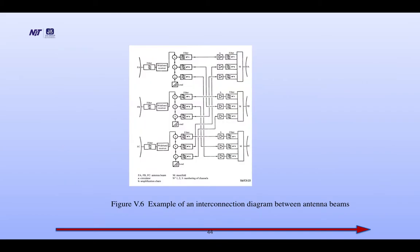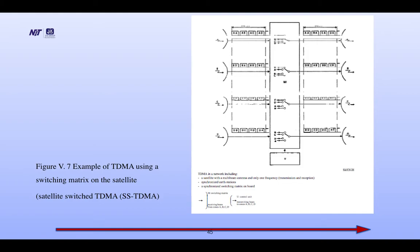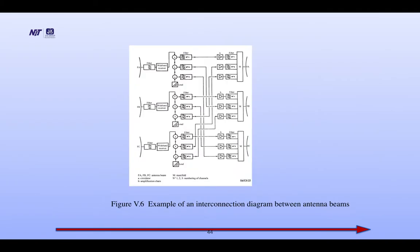This is the example of an interconnection diagram between the antenna beams. There are different filters and different multiplexing systems. Another set of filters routes signals to the output antennas. There is another picture of TDMA using the previous picture — it is another example of an interconnection diagram between antenna beams. Whenever feeding to the antenna, there are not only one set of filters but filter arrays, so that signal and noise levels can be well discriminated at the output.